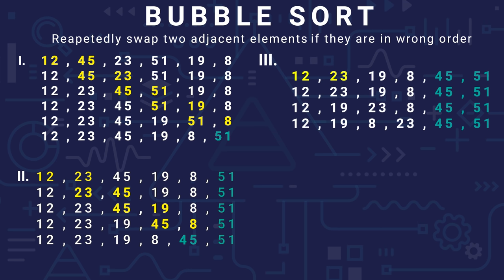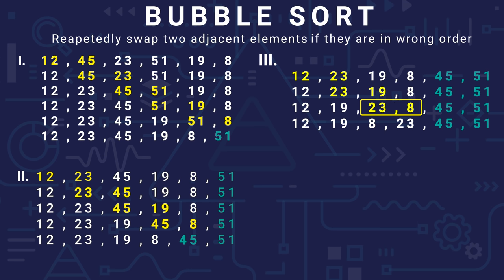In the third iteration, we see the same: some elements are in the right order already. When we find the wrong order, we swap them. Then 23 and 8 — wrong order, swap. After 23 is placed, we do not need to check further for this pass.